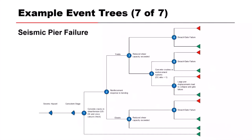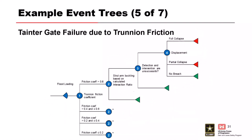A question was raised about the '+' symbol on node two in the tainter gate event tree. The plus on the node means the event tree is the same for each branch — it's just collapsed so you can better see it. The strut arm buckling and collapse is evaluated for each range in the trunnion friction coefficient. You can set this up as ranges as shown, or do a Monte Carlo analysis using a distribution for the trunnion friction coefficient. You want to make sure you're evaluating all possible trunnion friction coefficients since that's not necessarily a known parameter.